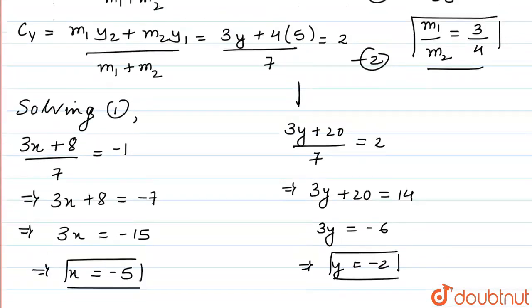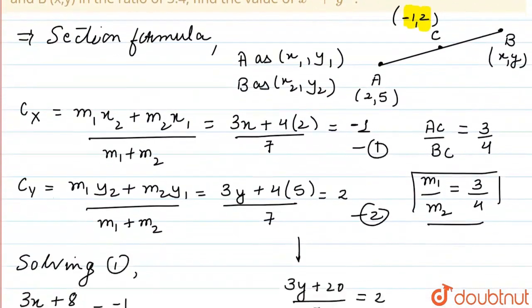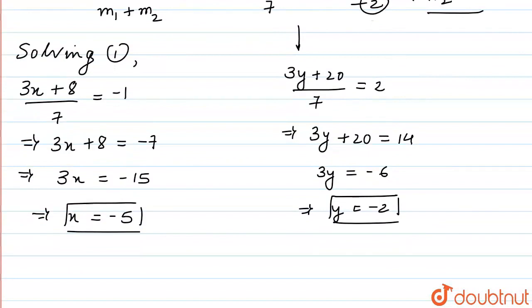Now, in this question, we have been asked to find the value of x² + y². We know the values of x and y. Using that, we can write x² + y² is equal to (-5)² + (-2)². That will make it 25 plus 4, or that is equal to 29. I hope you found this solution helpful. Thank you for watching.